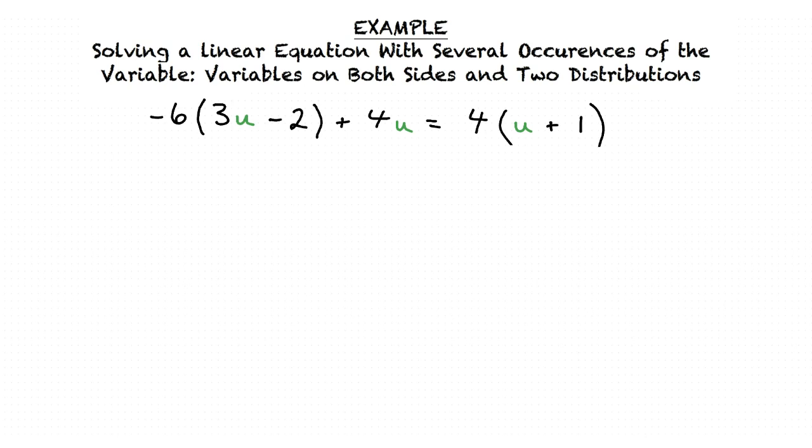Looking at our equation we can see that the variable u occurs on both sides. Our goal is to solve for u. This means we must use mathematical properties to manipulate our equation and to finally isolate our variable which in this case is u.